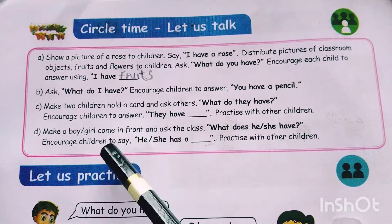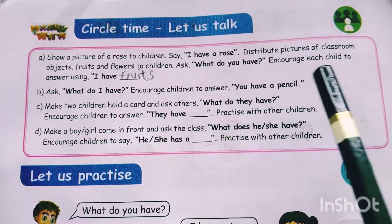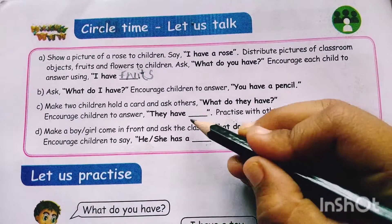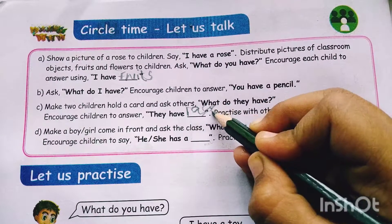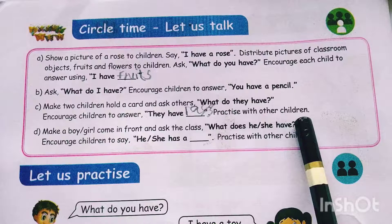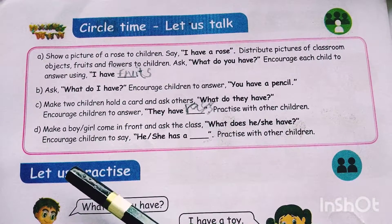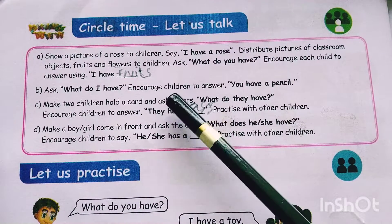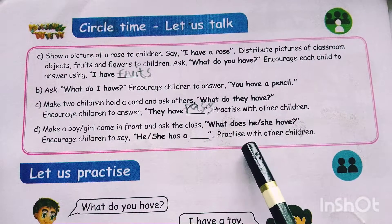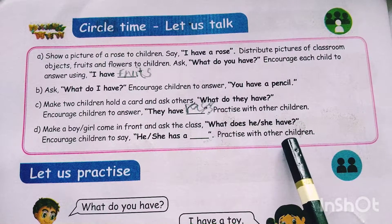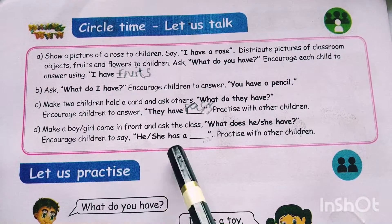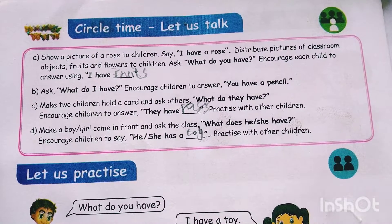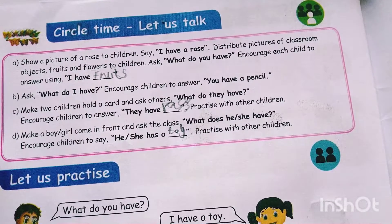Make two children hold a card and ask others: 'What do they have?' Encourage children to answer: 'They have roses.' Practice with other children. Make a boy or girl come in front and ask the class: 'What does he or she have?' — 'She has a toy.' Practice with other children.